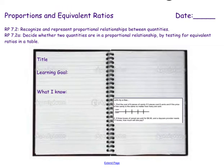Today's lesson is about proportions and equivalent ratios with your standards being to recognize and represent proportional relationships between quantities, and to decide whether two quantities are in a proportional relationship by testing for equivalent ratios in a table.